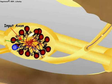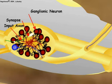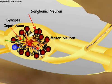The information is transferred from the input neuron to a ganglionic neuron at a synapse. The ganglionic neuron transmits the information further at its synapse with a motor neuron, which sends nerve impulses to the muscles of the jumping leg.